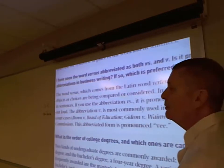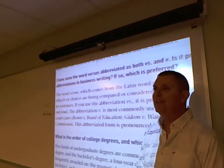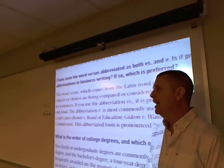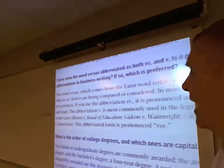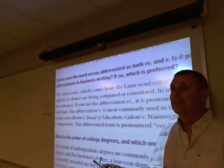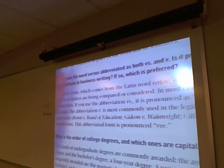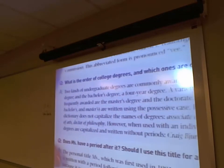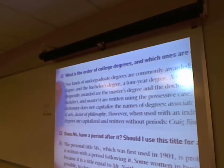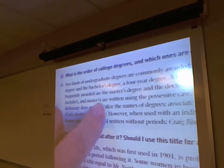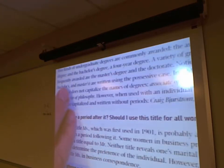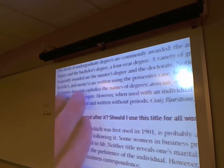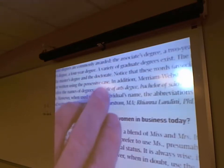What is the order of college degrees and which ones are capitalized? The degrees themselves are not capitalized, but the abbreviations are. Associate's degree, bachelor's degree — lowercase with apostrophe S. Names of degrees: Associate of Arts, Bachelor of Science, Master of Arts, Doctor of Philosophy — capitalize them if used as titles. When using abbreviations, they don't have internal punctuation but you capitalize the abbreviations: AA, BS, MA, MBA, PhD.